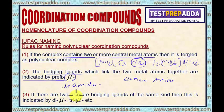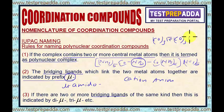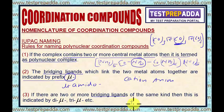Rule number three says: if there are two or more bridging ligands of the same kind, then this is indicated by di-mu, tri-mu, etc. For example, if we have CO3-Fe-CO3-Fe-CO3, these three carbonyl groups are bridging ligands. So for that, we say tri-mu-carbonyl.